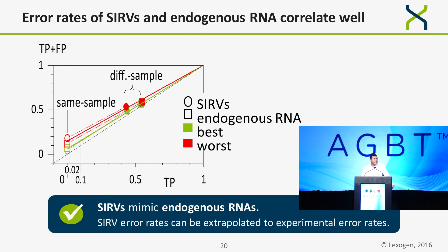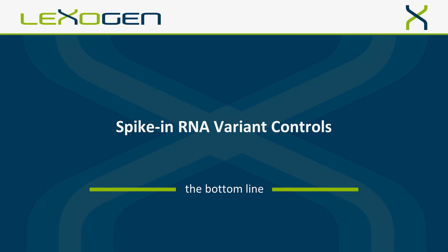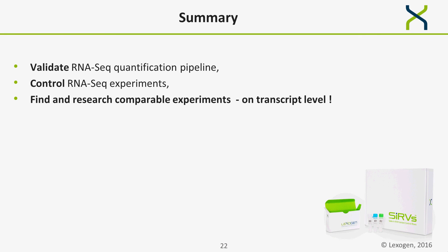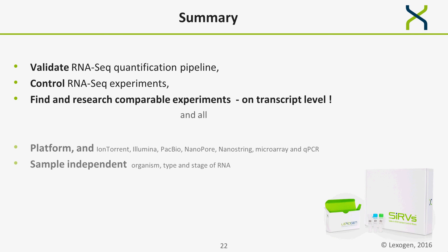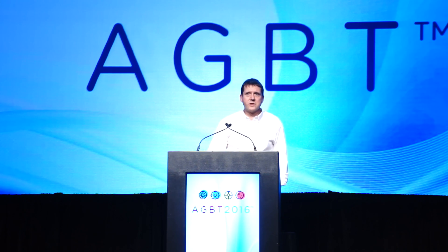To summarize: the important bit is that in this nutshell complexity of only 69 transcripts, we build in complexity that truly mimics the entire experiment. Spike-in variant controls allow you to validate RNA sequencing quantification pipelines, control individual experiments, and find comparable datasets — all on a transcript level. SERVs are platform and sample independent. If you have any further questions, please visit Lexogen in our suite or visit us at lexogen.com. Thank you very much.